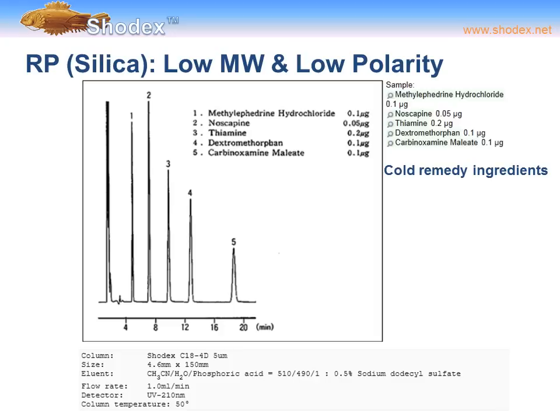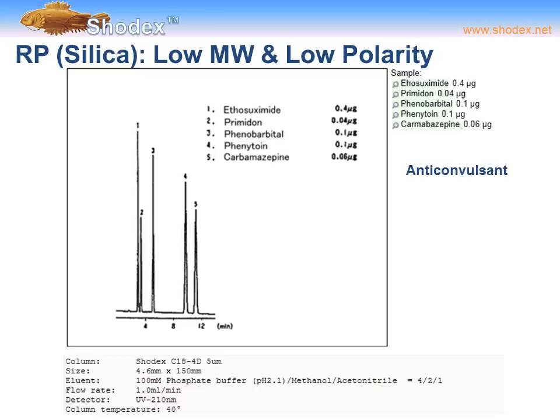In this example, we see a separation of cold remedy ingredients using a SHODEX C18 4D silica-based column — 4.6 mm ID, 150 mm length. The eluent is an acetonitrile/water/phosphoric acid mixture at a ratio of 510:490:1, plus 0.5% sodium dodecyl sulfate. The flow rate was 1 mL/min, a UV detector at 210 nm was used, and the column temperature was 50°C.